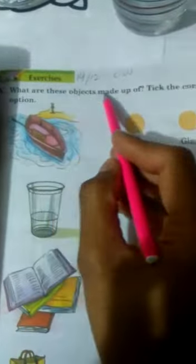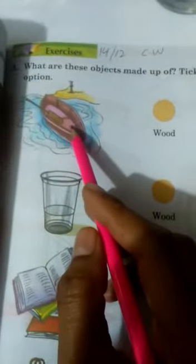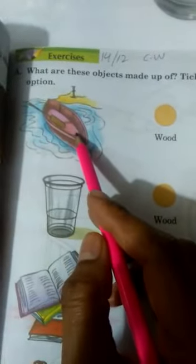What are these objects made up of? Tick the correct option, understand? And now you look at, look here...